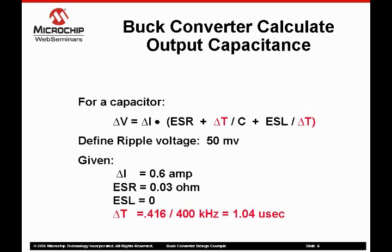The equation shown here shows that we are solving an equation with multiple unknowns: ESR, C, and ESL. The reasonable approach is to remove terms that are not significant, and then make a reasonable estimate of the most important parameter that you can control — that is the ESR value. The capacitor ESR value was selected from a vendor's catalog of SMPS-rated capacitors. Given the ripple current and target output voltage ripple, an ESR value of 0.030 ohms was selected from a list of capacitors rated for 0.6 amp ripple current.